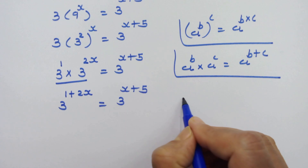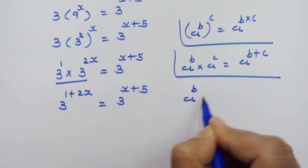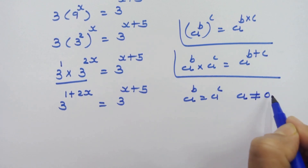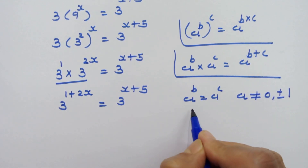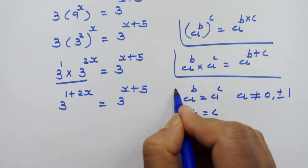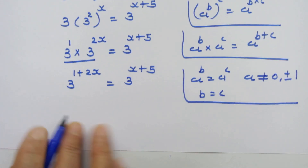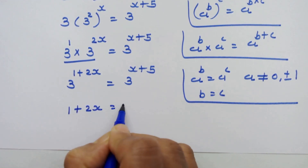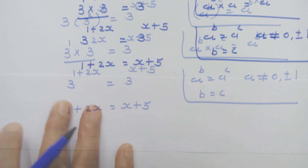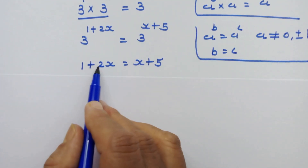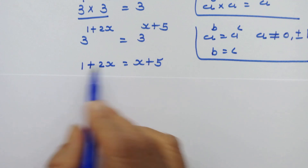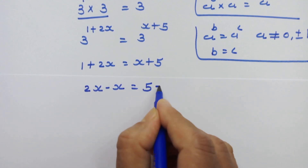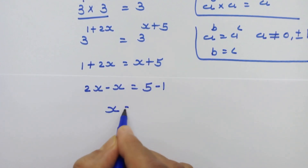Now we have the same base on both sides. So if a raised to b equals a raised to c, when a is not equal to 0 or plus or minus 1, then we can equate the exponents: b equals c. Using this rule, we equate the exponents: 1 plus 2x is equal to x plus 5. Moving x to the left and 1 to the right, we get 2x minus x equals 5 minus 1, so x is equal to 4.